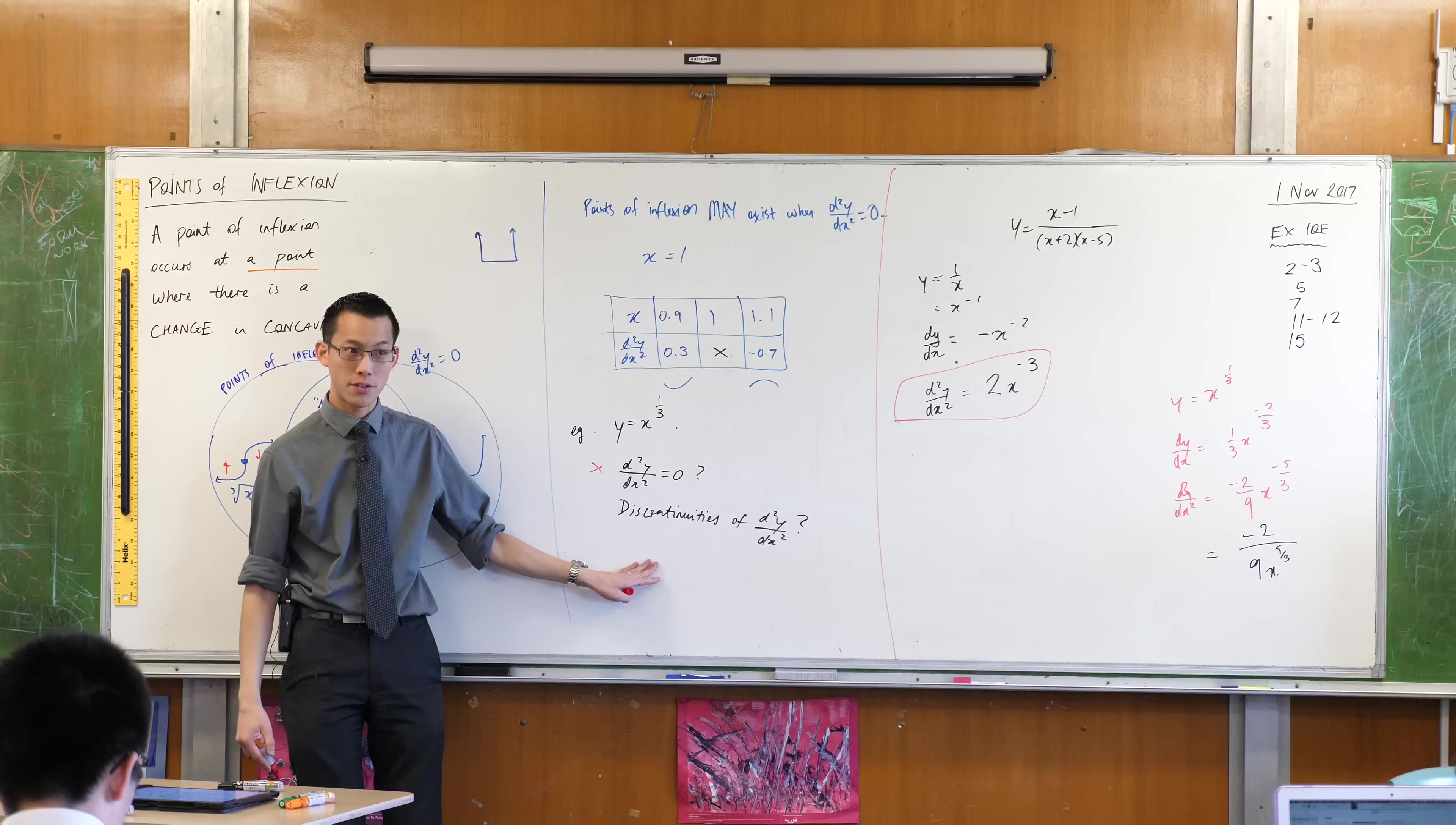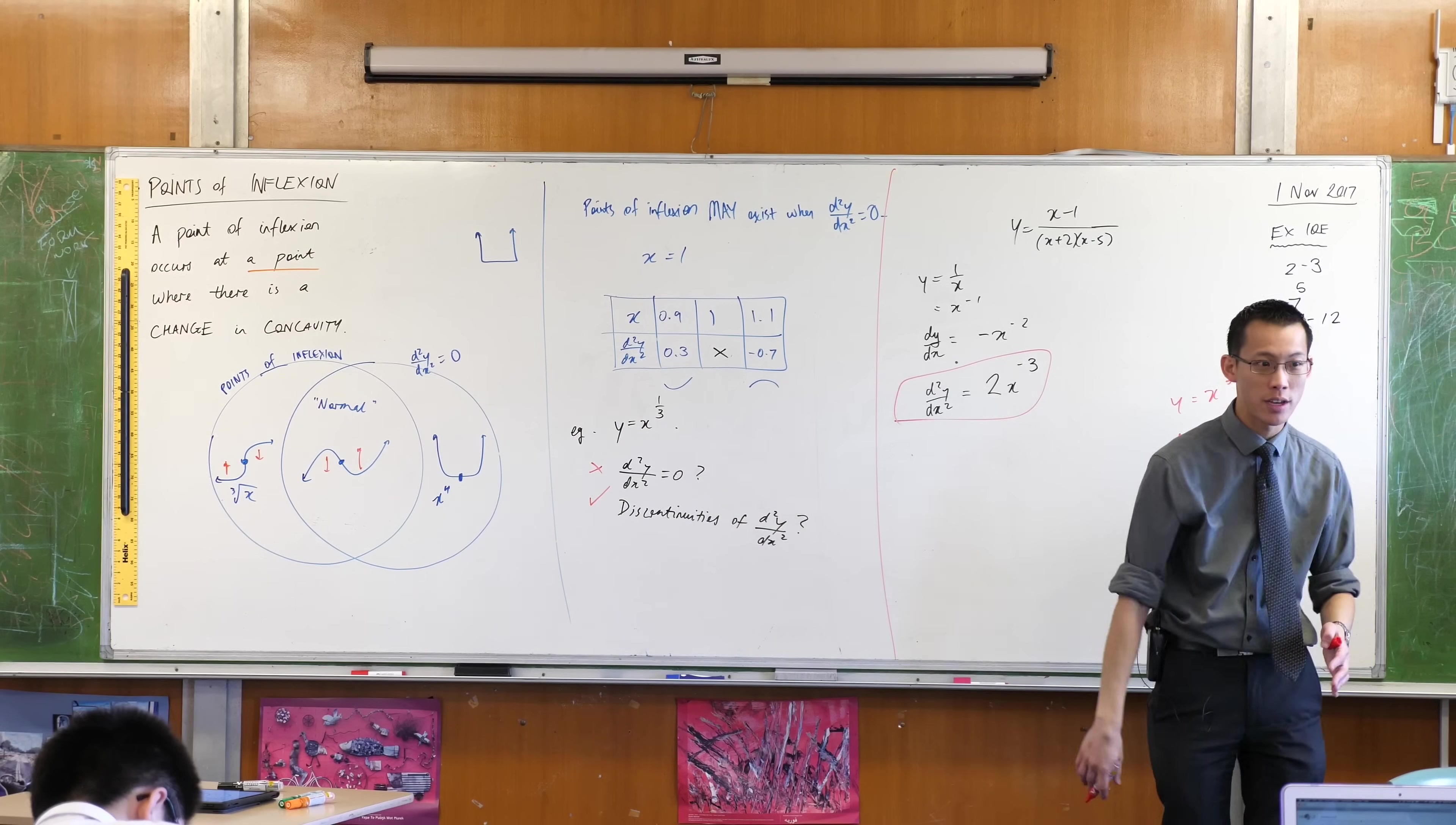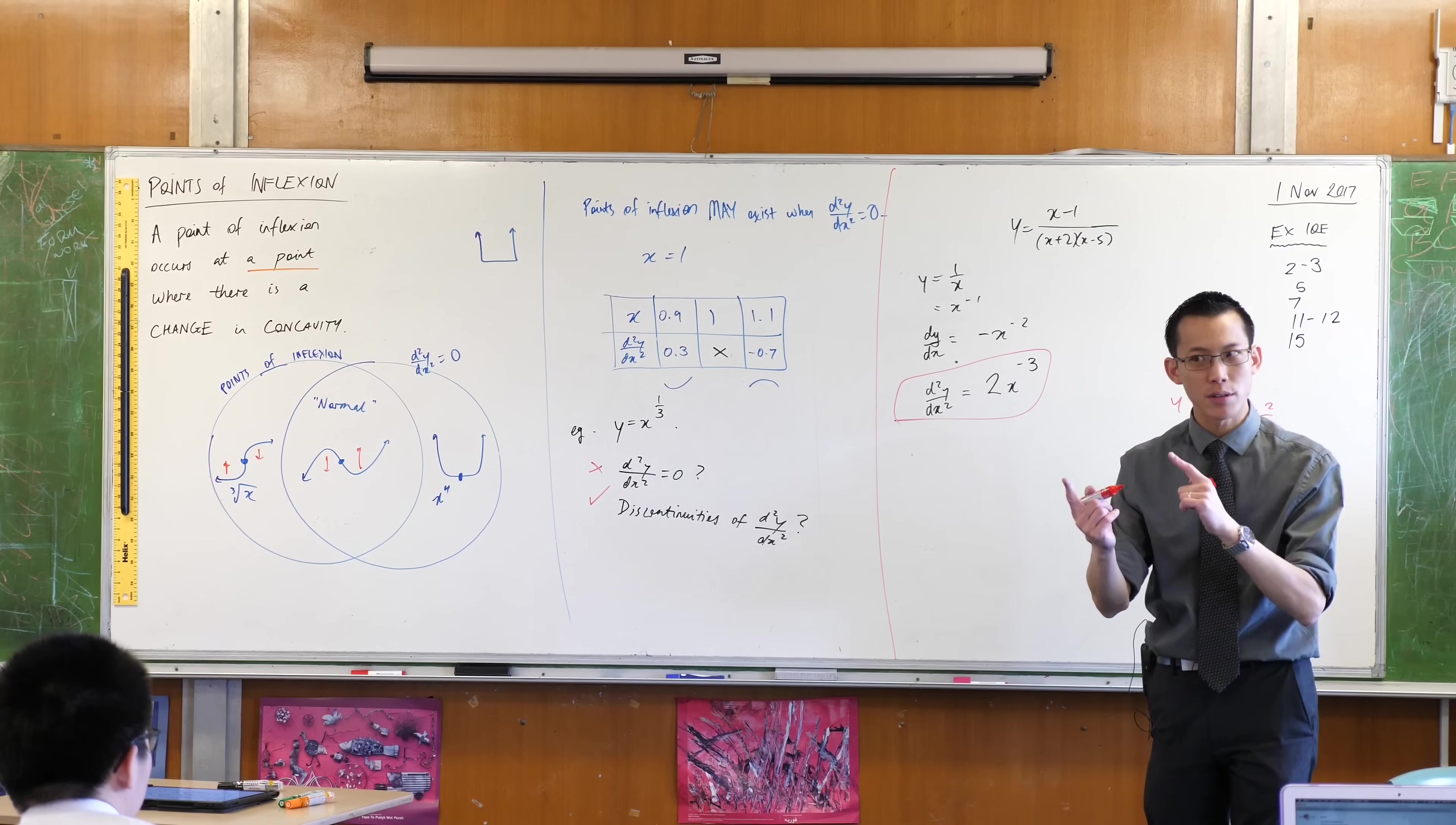Are there any discontinuities for the second derivative? And the answer is yes, there are. At x equals zero, you have a discontinuity. You can't put that value in. So using the process that I've just shown you, you get suspicious and you say, maybe something happens on either side. Now let's actually do this. Let's see what happens.